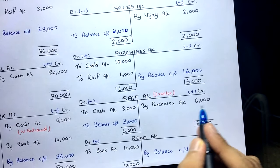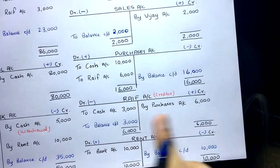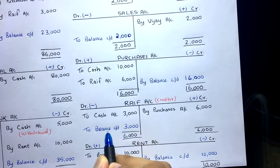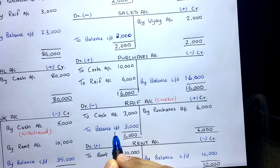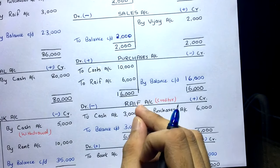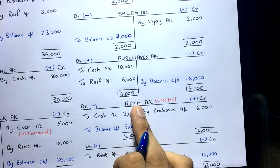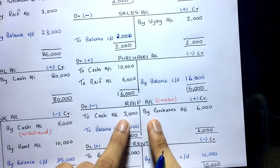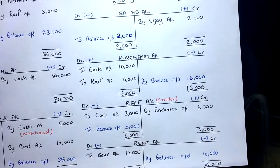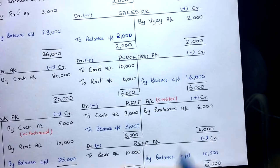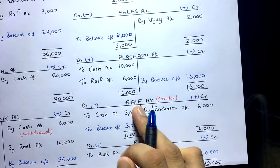For the Rife Account: credit side has 6,000, debit side has 3,000. Credit side is bigger, so write 6,000 on both sides. Shortfall on debit side: 6,000 − 3,000 = 3,000, balance carried down 3,000. The interpretation: we still owe 3,000 to Rife. In a real business, all transactions with a supplier are summarized in one ledger account, and the balance tells you exactly how much you owe at any point in time.